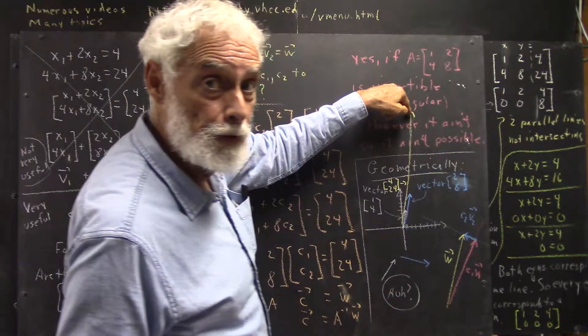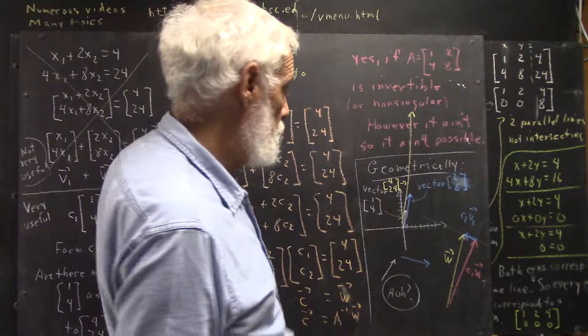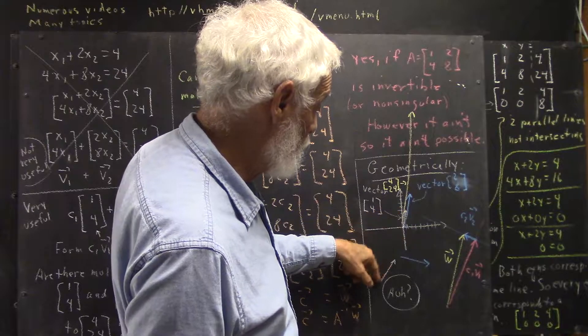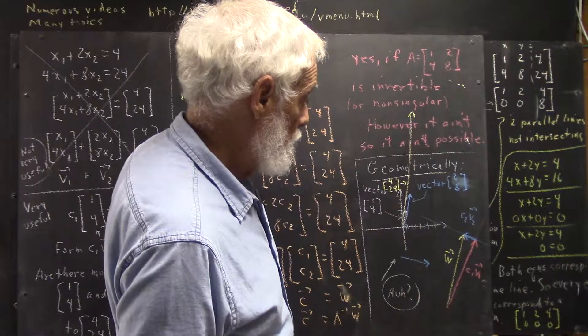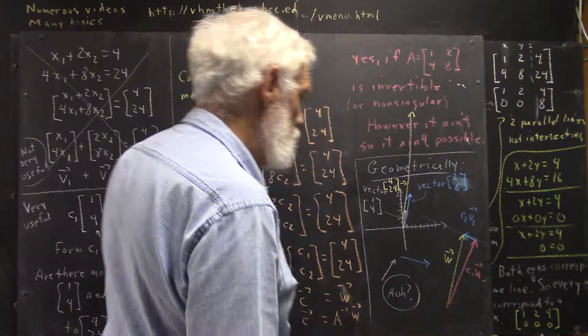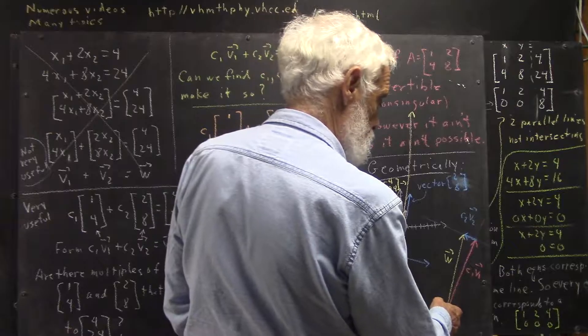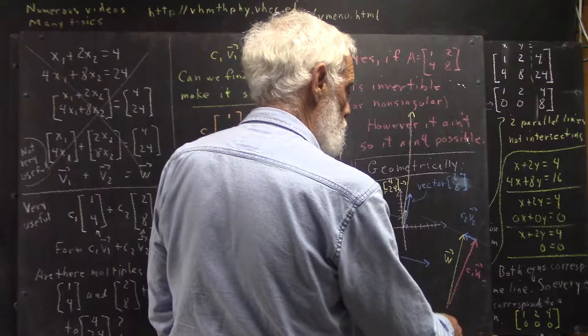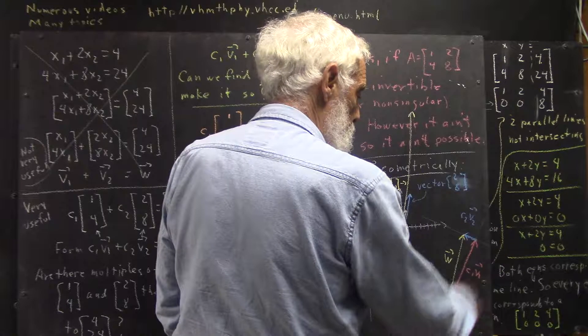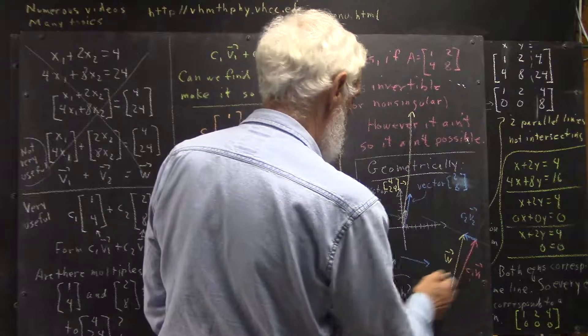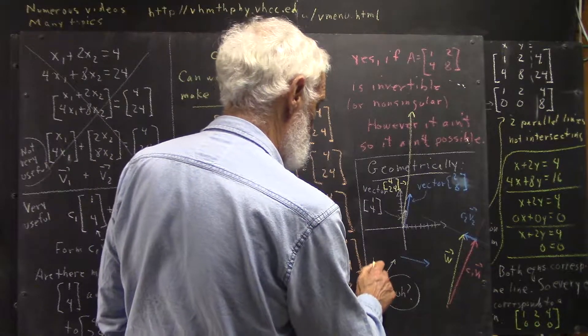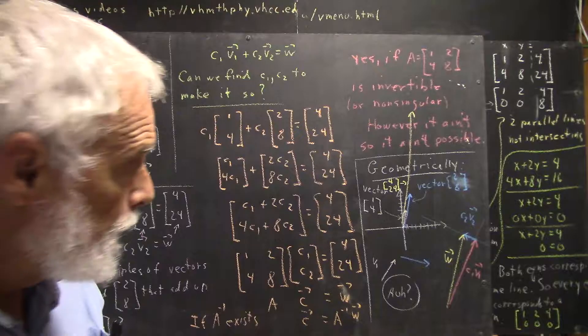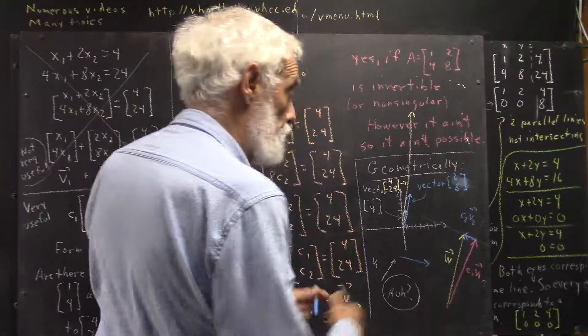And this one has a six to one ratio. It's not going to happen. Now what if the two vectors, instead of being like this, were like this, and our w vector was here? Well, we could draw, starting from the initial point of our w vector, we could draw a line parallel to the v1 vector, to our first vector.